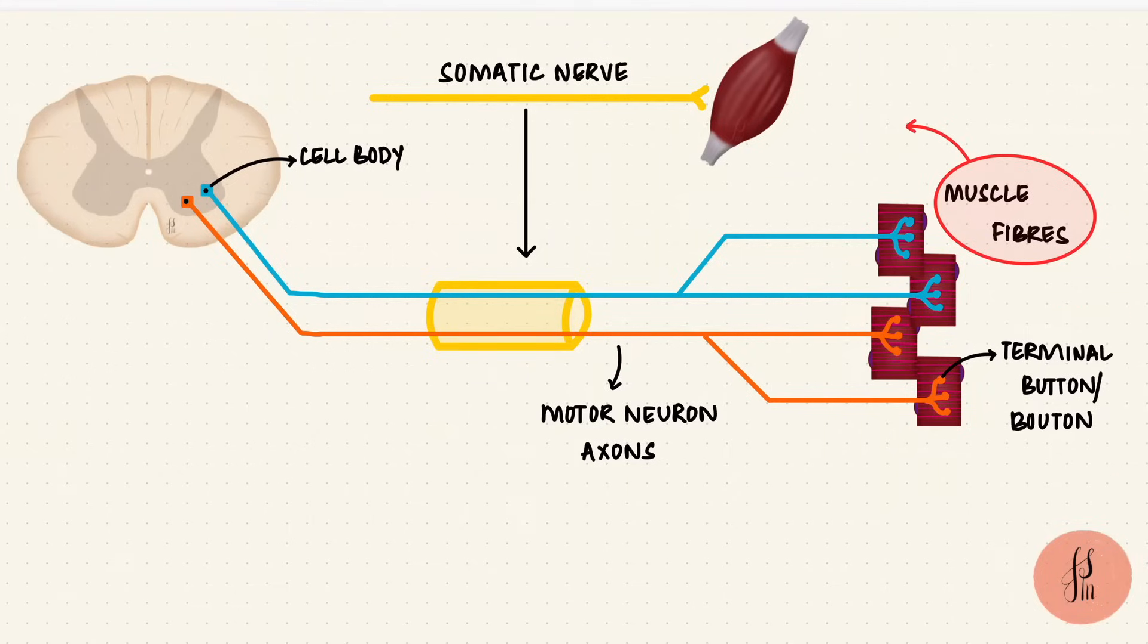But remember that the muscle fiber is nothing but a muscle cell. So the motor neuron, together with the muscle fibers that it innervates, forms a unit called a motor unit because these fibers will contract together.